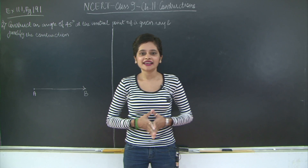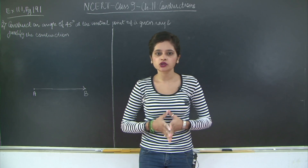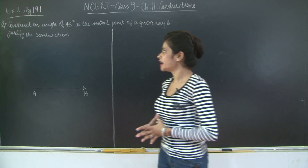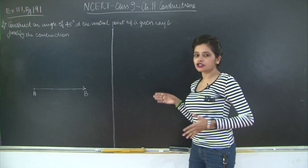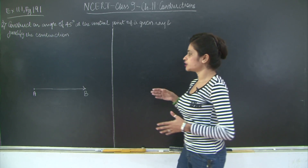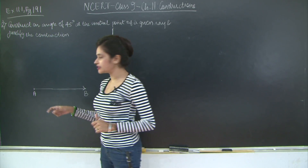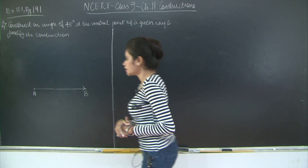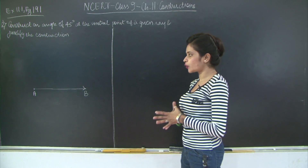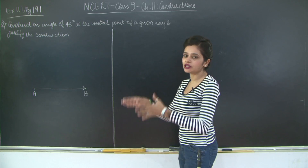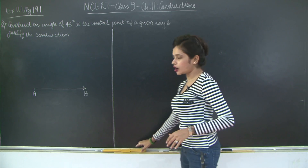Hello students, welcome back. Let us continue with exercise 11.1 of chapter 11 Constructions. We will take a look at the second question wherein, given an initial ray, you need to draw an angle of 45 degrees at the initial point of the ray. So AB is your ray and A is the initial point. At A you need to draw an angle of 45 degrees. So how will you do this?